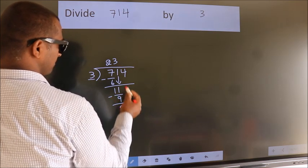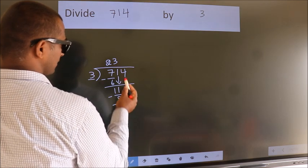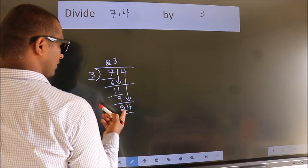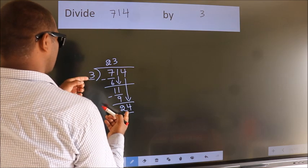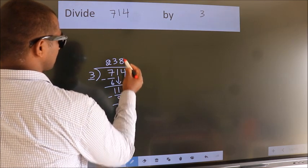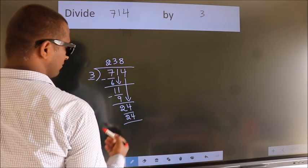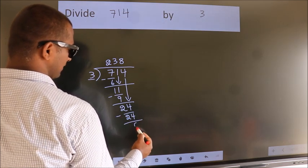After this, bring down the beside number, so 4 down. So 24. When do we get 24 in the 3 table? 3 times 8 equals 24. Now we subtract. We get 0.